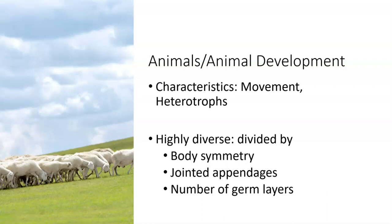For animals and animal development, know the characteristics of animals — for example, they have movement and they are heterotrophs, meaning they eat other organisms for their energy. Also know the things that diversify animals and what they are divided by, such as body symmetry, jointed appendages, and germ layers. That's going to be important material from those two lectures.